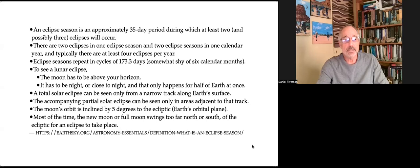In order to see a lunar eclipse, the moon has to be above your horizon. It has to be night or close to night, and that only happens for half of the Earth at once. A total solar eclipse can only be seen from a narrow track along the Earth's surface.